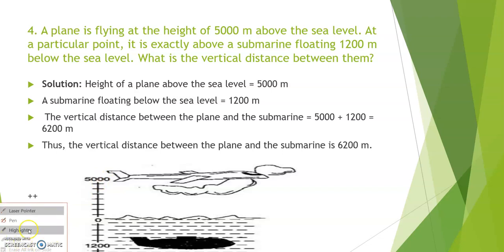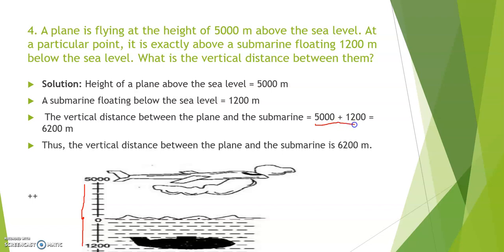To find the vertical distance between the plane and the submarine: from the plane you cover 5000 meters down to sea level at 0, then go further to the depth of 1200 meters. So the total vertical distance between the plane and submarine is 5000 plus 1200, which equals 6200 meters. Thus the vertical distance between the plane and submarine is 6200 meters.